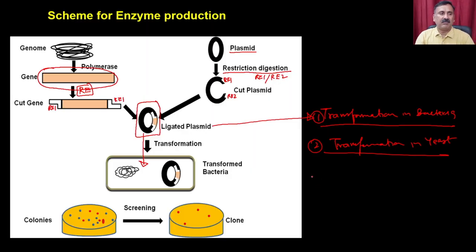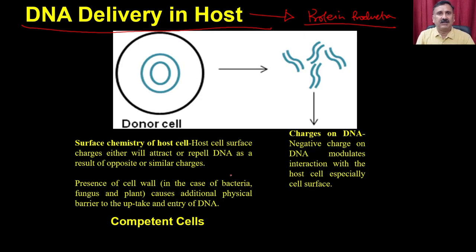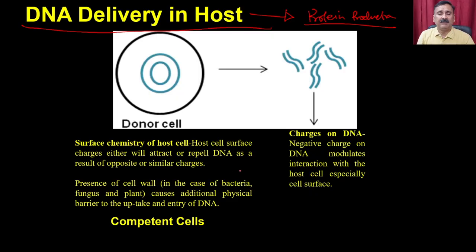In today's lecture, we are going to discuss how you can deliver DNA into mammalian cells. DNA delivery into the host is very important for protein production. The surface chemistry modifications used in bacterial transformation are not possible in the mammalian system, because mammalian cells do not have a cell wall and their surface chemistry is very complicated compared to the bacterial system. So we have alternate approaches to deliver DNA into mammalian hosts.